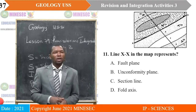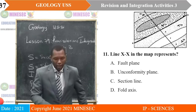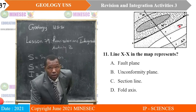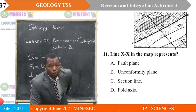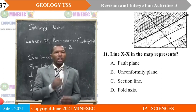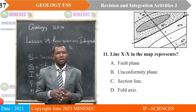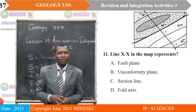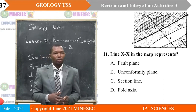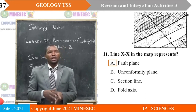Still on that map, the line X-X to X in the map represents — along that line you realize it is a zone where there are disruptions and displacement. A — fault plane; B — unconformity plane; C — section line; D — fold axis. The correct answer is A, a fault plane.